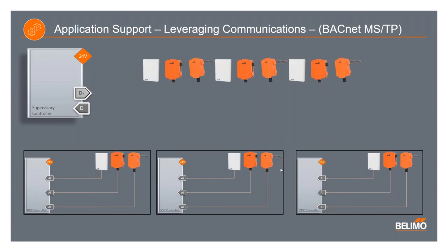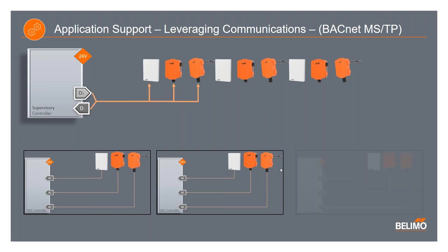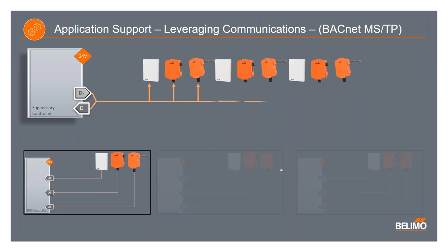Here we have a larger system — the same system represented on the previous slide but expanded across multiple zones. In this case, you have the same three sensors installed across three different zones. Rather than bringing the sensors back to the physical local controllers, the additional sensors can be added to the same MSTP subnet to reduce the physical inputs as well as reduce wiring and installation time, all while gaining the benefit of additional available objects on the BACnet sensor.